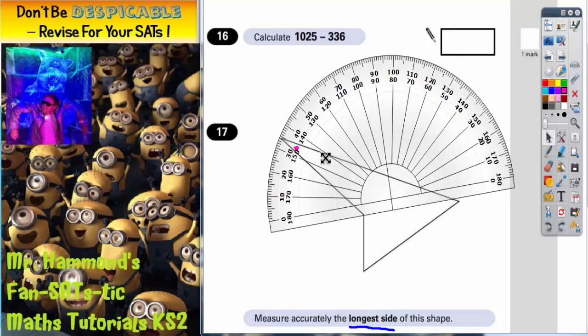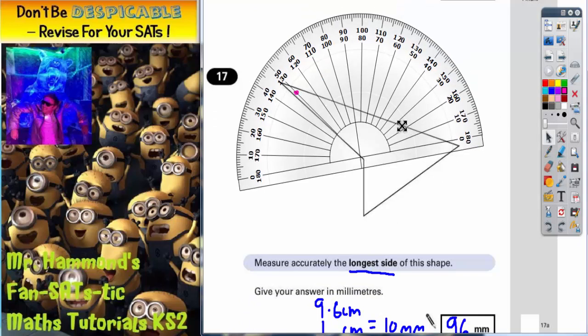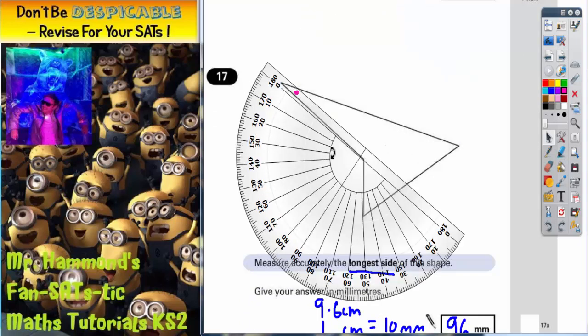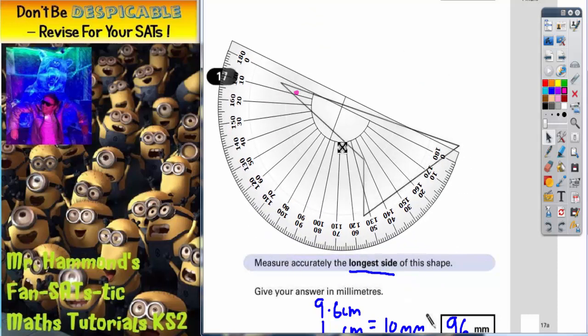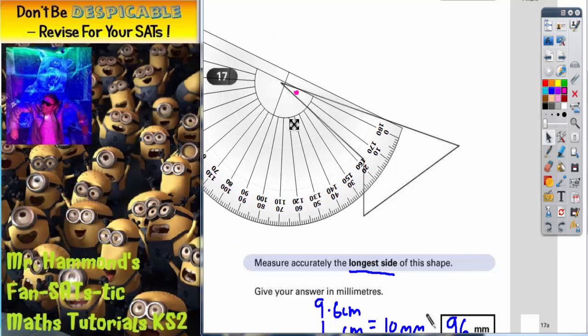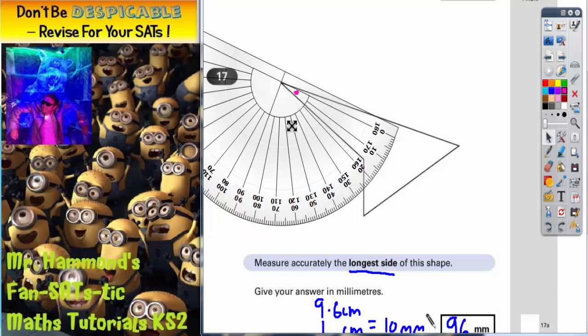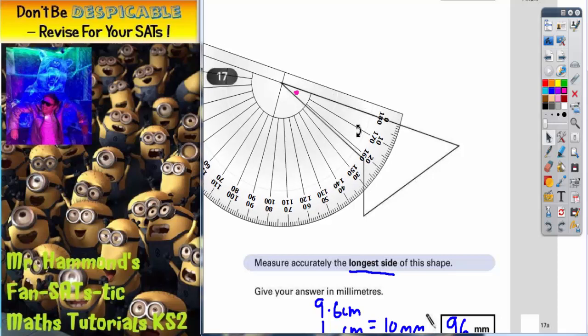So, bring your angle measurer in. We need to turn the angle measurer upside down, because we need our zero line to be along this line here. The center of the angle measurer needs to go on the corner of the angle you're actually measuring. So that will need to go there. But as I say, we need to have the zero line level with this side of the shape that we're trying to measure.